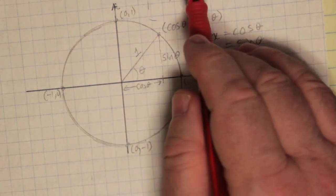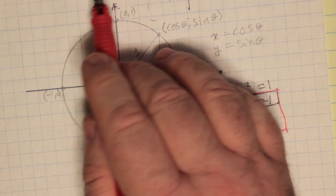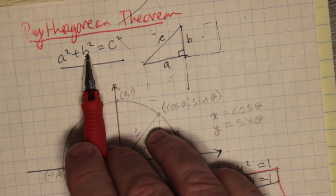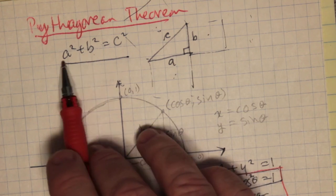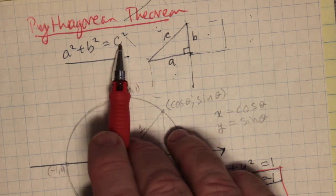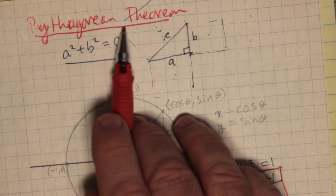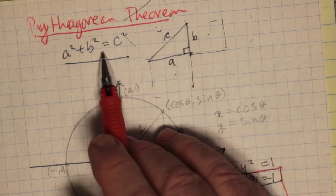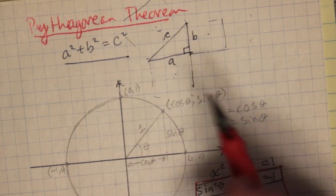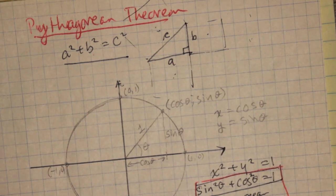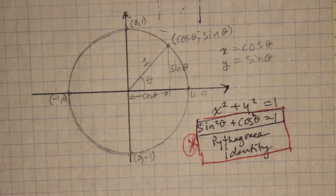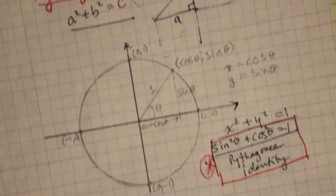For the Pythagorean Theorem, if A was 3 and B was 4, then C would be the square root of 3² + 4², which is 9 + 16 = 25. So C squared is 25, and C equals 5. That is the Pythagorean identity — well, the theorem in this case.